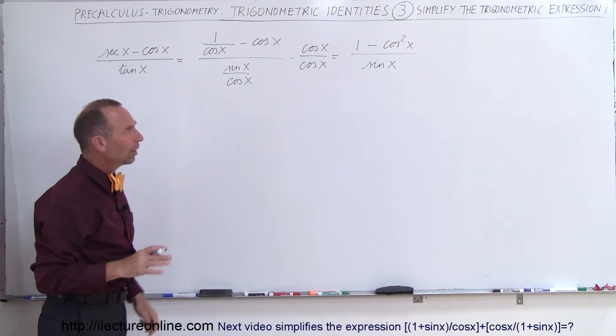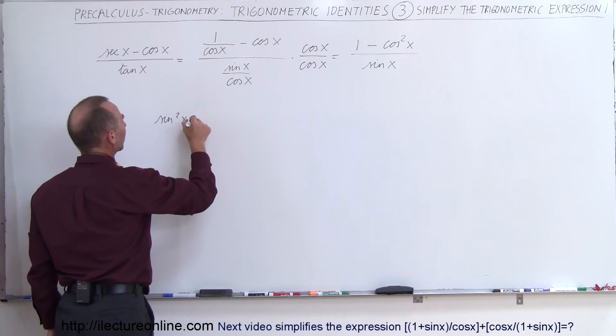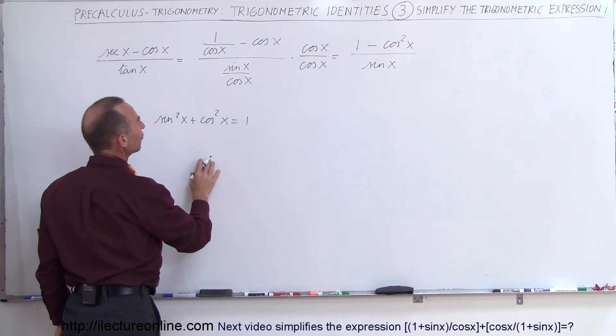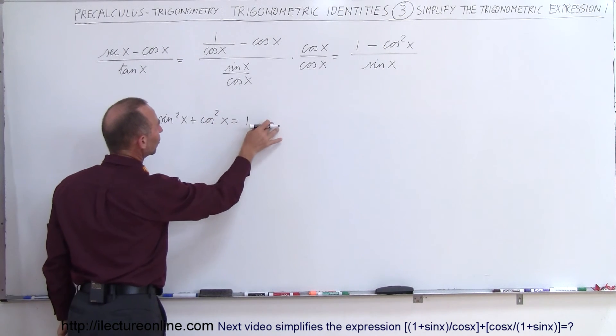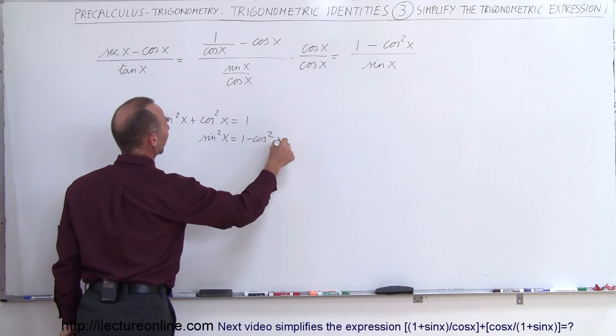Now you have to remember another identity. Remember that the sine squared of x plus the cosine squared of x equals 1. So then if you bring this to the other side you then have the sine squared of x equals 1 minus the cosine squared of x.